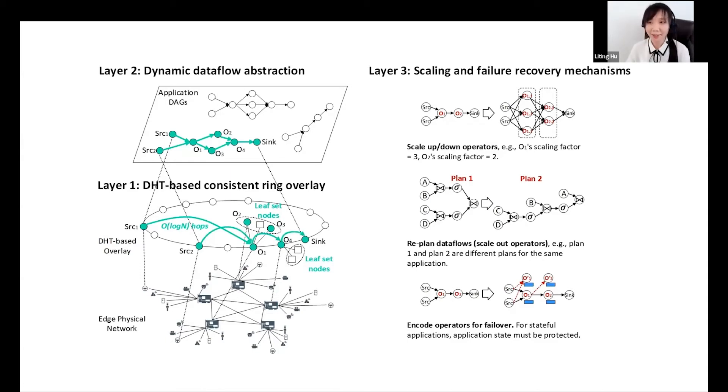The third layer is the scaling and failure recovery mechanisms. Every node has a routing table and a leaf set. The leaf set contains physically closest nodes to this node. We use the leaf set nodes to scale up and out operators and replicate operators to handle failures and stragglers.